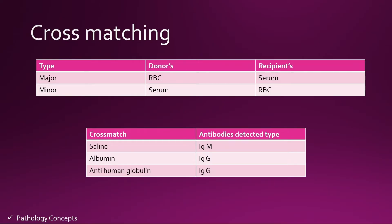Now let's learn about cross matching. There are two types: first is major cross match and second is minor cross match. The major cross match is defined by the cross match between donor RBCs and recipient serum. The minor cross match is defined by the cross match between donor serum and recipient RBCs. The antibodies detected by cross matches are of two types: first is IgM and second is IgG.